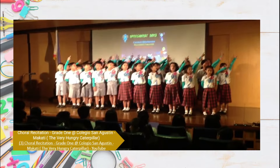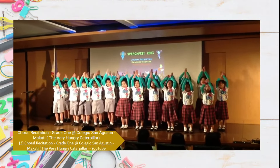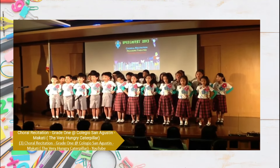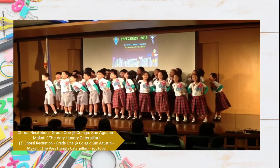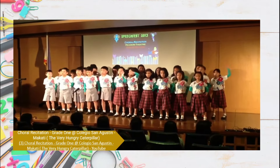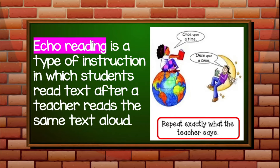The sun came up, and out of the egg came a tiny and very hungry caterpillar. He started to look for some food. Now let's go to echo reading. Echo reading is a type of instruction in which students read text after a teacher reads the same text aloud. It simply means that the teacher reads the text first in echo reading. Then after that, the student repeats it back to the teacher.